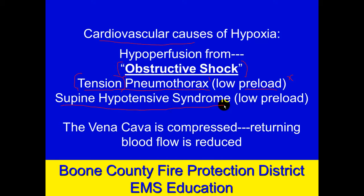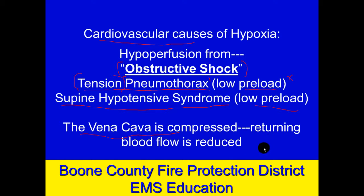The same thing can happen with the pregnant uterus. A patient who is 20 to 24 weeks along — at least halfway, closer to two-thirds through gestation — has a large heavy fetus pressing posteriorly on the vena cava, reducing preload. So babies and bubbles: both causing the vena cava to be compressed, which reduces preload. And remember, the heart can only pump out what is brought back to it. So one possible cardiovascular cause of hypoxia would be hypoperfusion from obstructive shock.